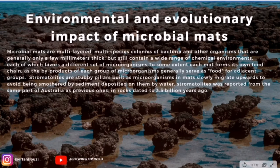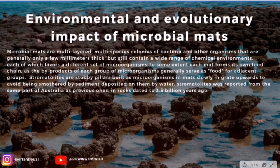Going into more detail on the things we discussed: microbial mats are multi-layered, multi-species colonies of bacteria and other organisms that are generally only a few millimeters thick, but still contain a wide range of chemical environments, each of which favours a different set of microorganisms. To some extent, each mat forms its own food chain, as the by-products of each group of microorganisms generally serve as food for adjacent groups.